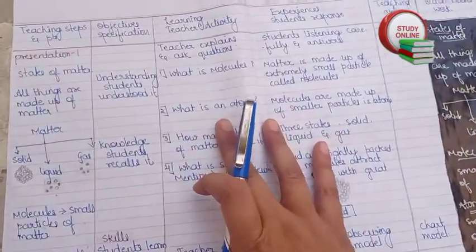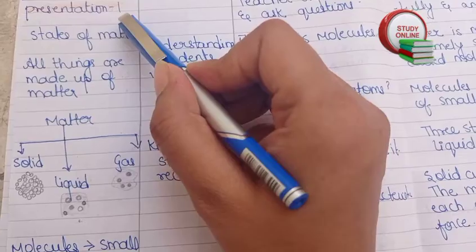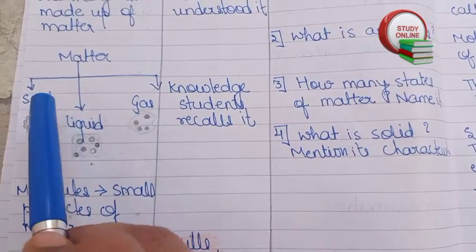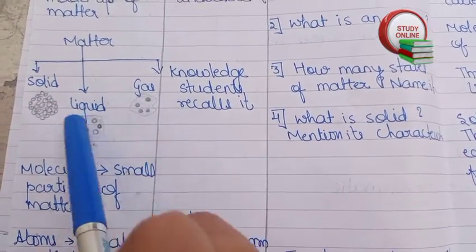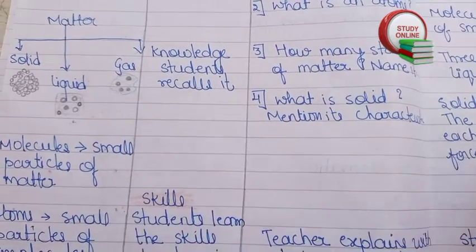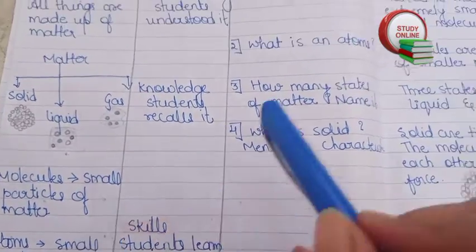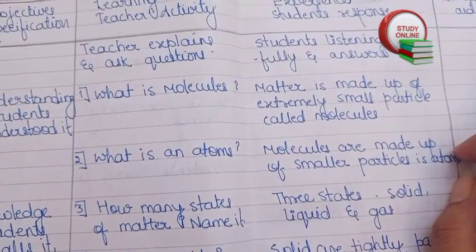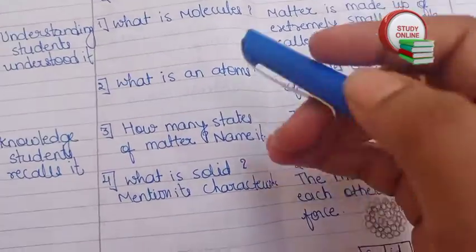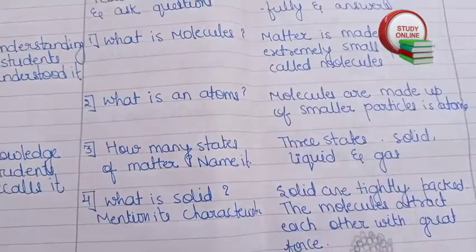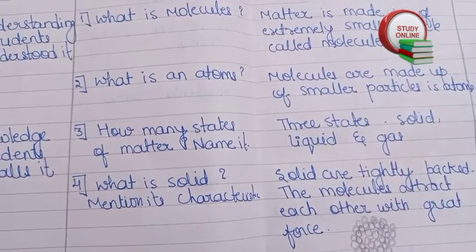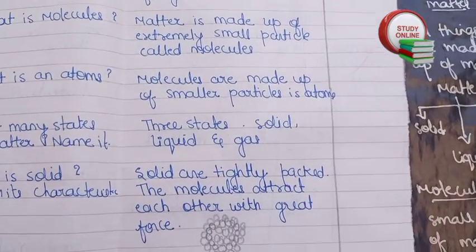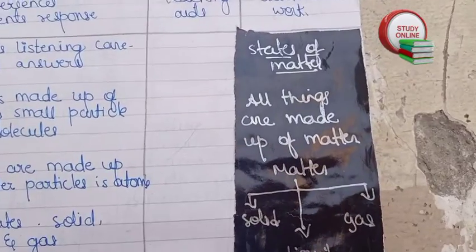Now in Presentation 1, we explain to students about states of matter. You can see a trade diagram showing solid, liquid, and gas, which we draw on the blackboard along with molecules and atoms. After explaining, we ask questions such as: What is a molecule? What is an atom? How many states of matter are there and name them? What is solid and mention its characteristics? The expected answers are provided, followed by blackboard work.